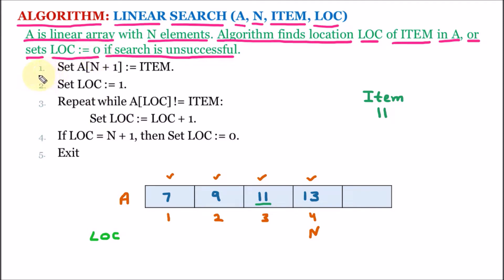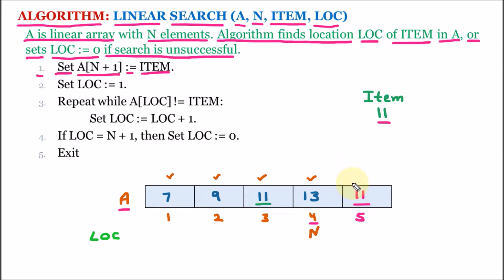Line number one of the algorithm says: set A[N+1] equal to item. Here we know that A is the array, the value of N is 4, and N+1 means 5. So A[5] refers to the last position, and that is equal to item — and item is 11. So we are putting 11 at the end of the array, making it the endpoint for the loop. The loop will break here.